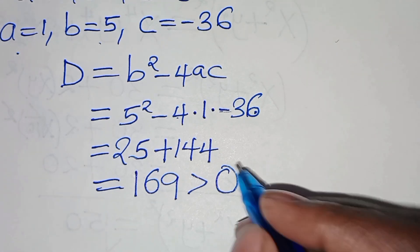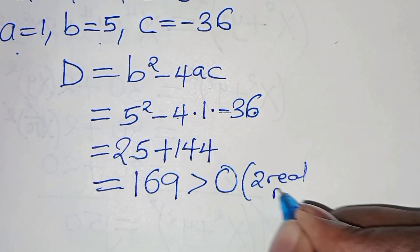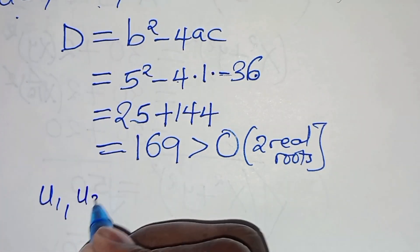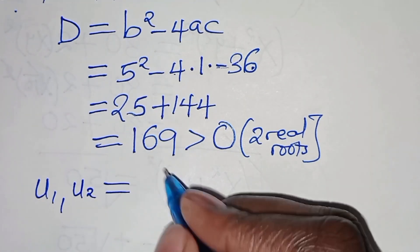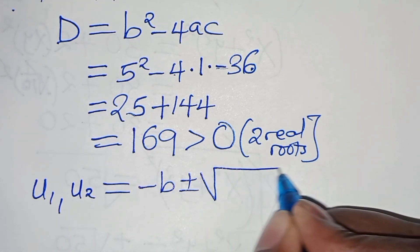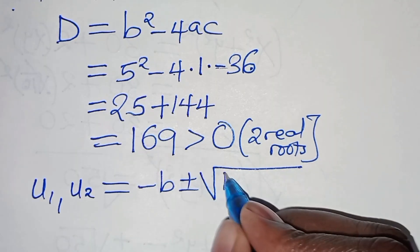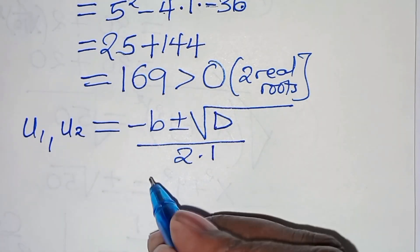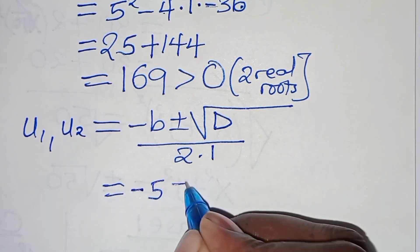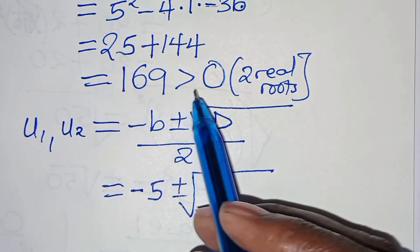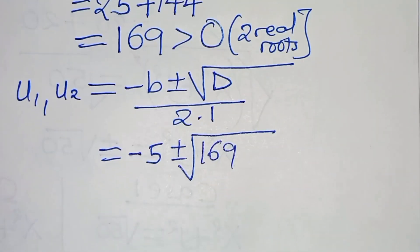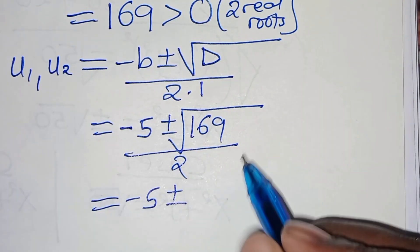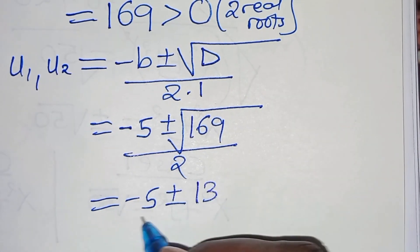Since the discriminant is greater than 0, this implies we have 2 real roots, and therefore we can proceed to solve for u1 and u2 by applying the quadratic formula: minus b plus or minus the square root of b squared minus 4ac, all over 2a. So we have minus 5 plus or minus the square root of 169, which is 13, over 2.